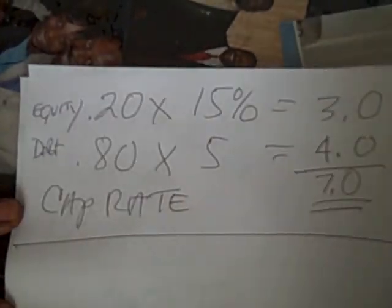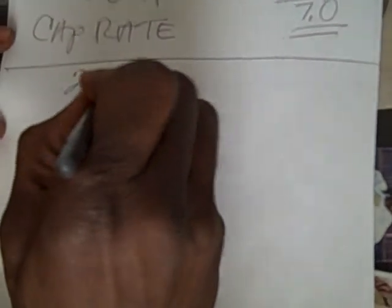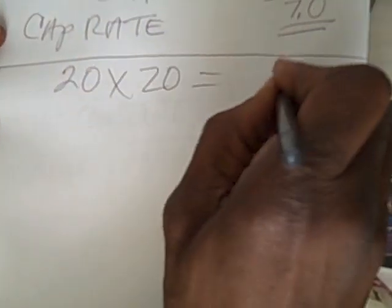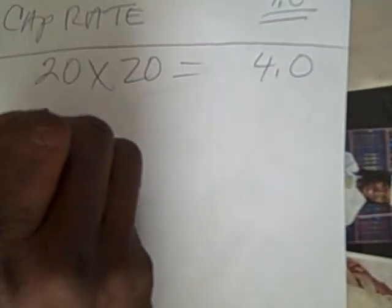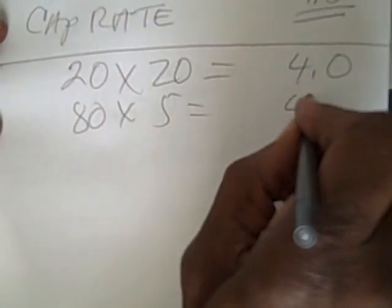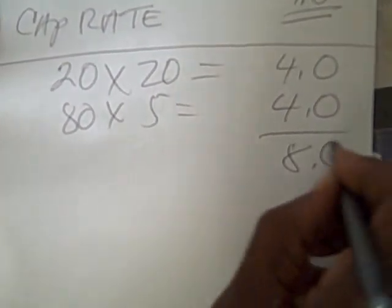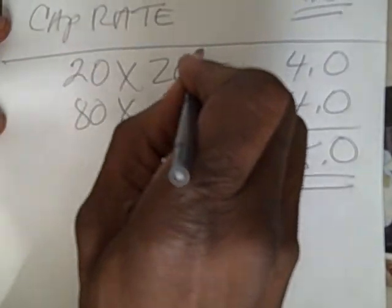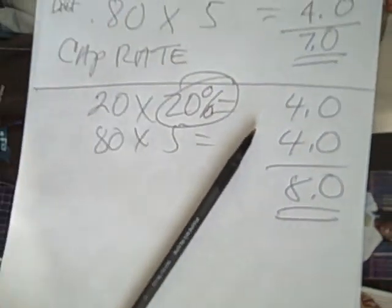Let's do one more. If you were a little greedy and you want 20% — 20 times 20 equals 4.0 — and we know the debt rate is 80 times 5, equal 4.0. That gives you a whopping 8% cap rate for a 20% return. Now that you have that information, when you're negotiating, you'll know how low you can go and still beat out your competition. This is Herb Strather from Strather Academy.